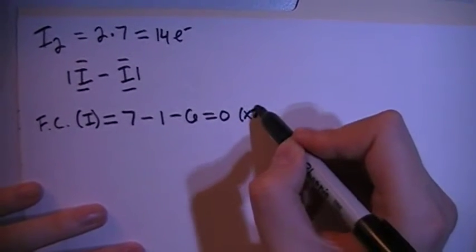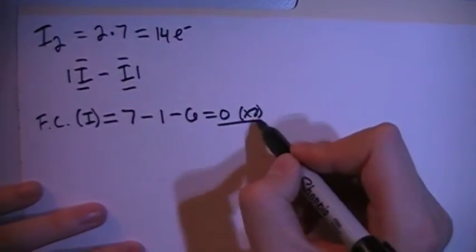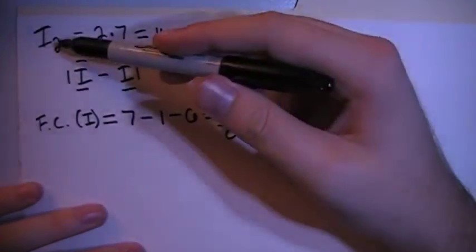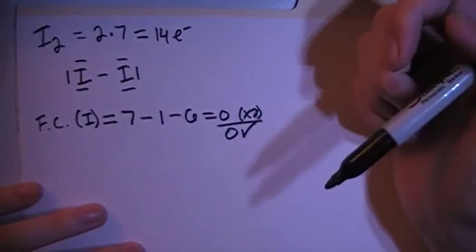Multiply that by two because there are two of them. Still results in an overall formal charge of zero, which is what we need, because this is a non-charged compound or particle.